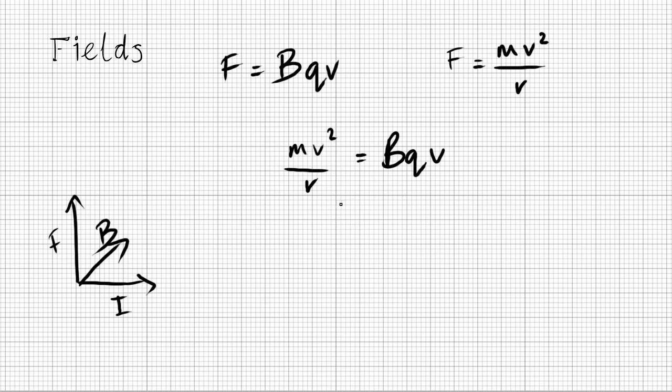And this is actually rearranged and cancelled down into a more useful equation with the momentum. So actually let's just go through that quickly. So obviously one of the V's cancel so it becomes MV equals RBQ and then just you want an equation for R. Well that's P, isn't it?